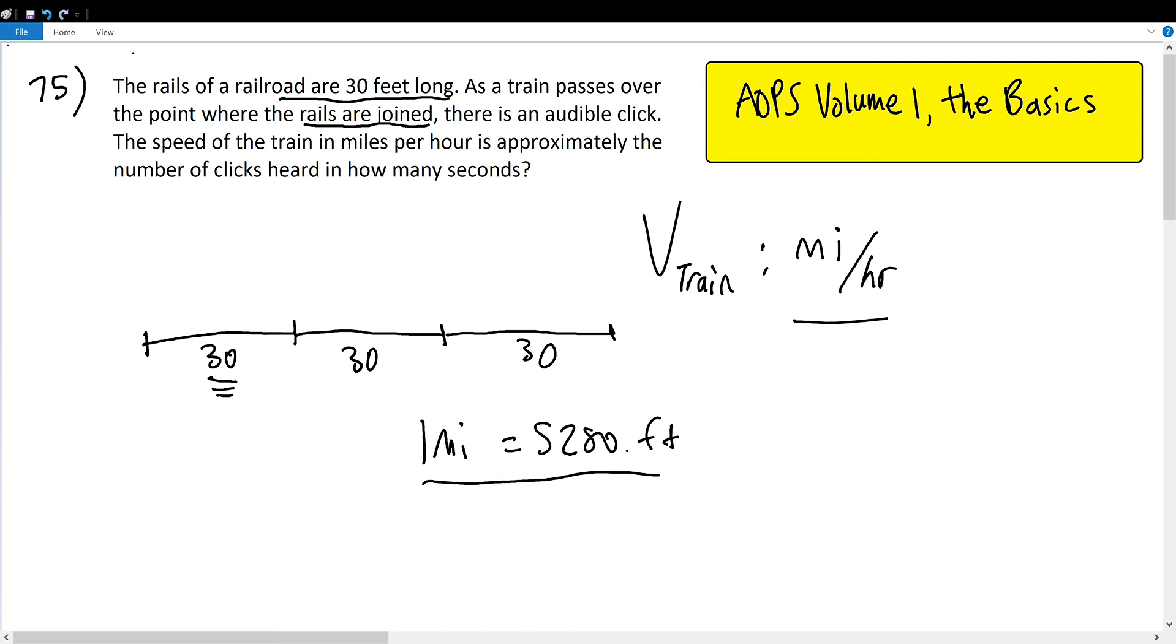So with this in mind, how many 30 feet are there in 5,280 feet? Because then it will tell us how many clicks there are in one mile. So 5,280 divided by 30 should yield 176, meaning there are 176 clicks in one mile.